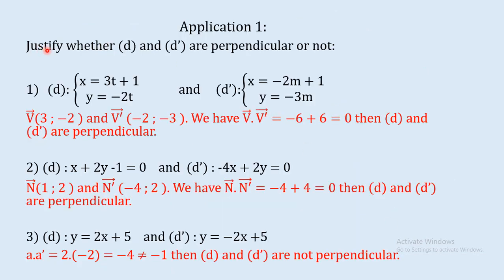Application: justify whether d and d prime are perpendicular. In the first case, parametric form: director vectors are v(3, -2) and v prime(-2, -3). The scalar product is xx prime + yy prime = -6 + 6 = 0, so these lines are perpendicular. In the second case, Cartesian form: normal vectors are n(1, 2) and n prime(-4, 2). The scalar product equals 0, so d and d prime are perpendicular. In the third case, reduced form: a·a prime = -4, which is different from -1, so these two lines are not perpendicular.